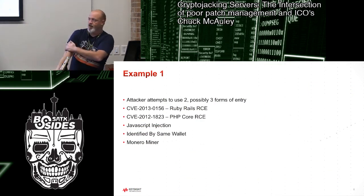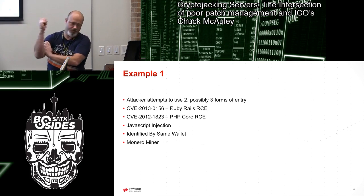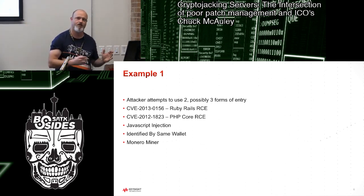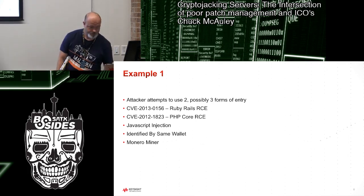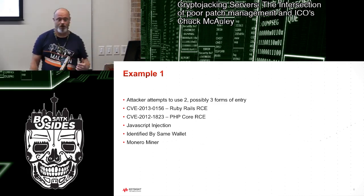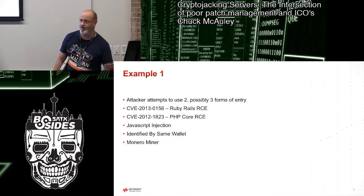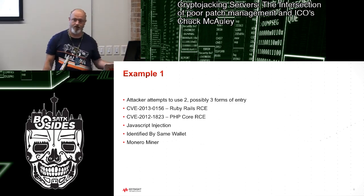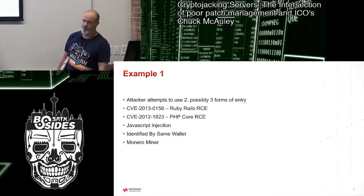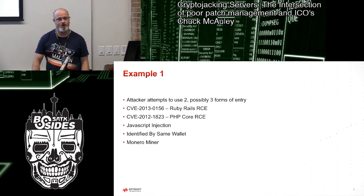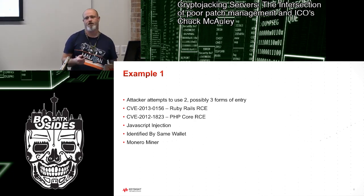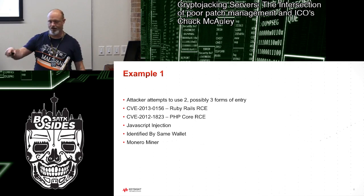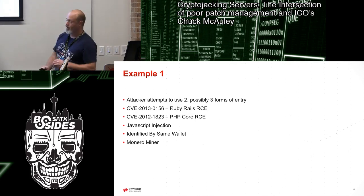Let's look at campaign one. These were all seen from December of last year to now, so even if you're seeing ancient CVEs, this is not ancient news. This guy used a CVE dated to 2012 and one from 2013 — the 2013 one targeted Ruby on Rails, and the other was a PHP core vulnerability for remote code execution. There was also a JavaScript injection attempt. I was able to identify them all because they all had the same wallet ID, pitched into the same mining pool. It was a Monero Classic miner.